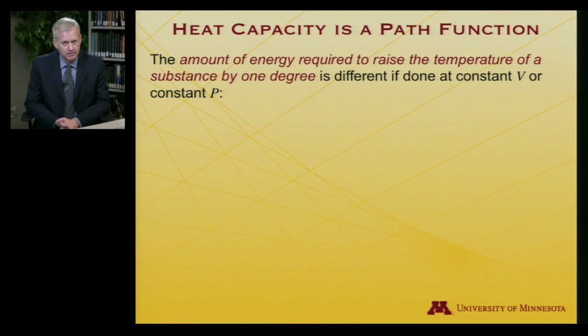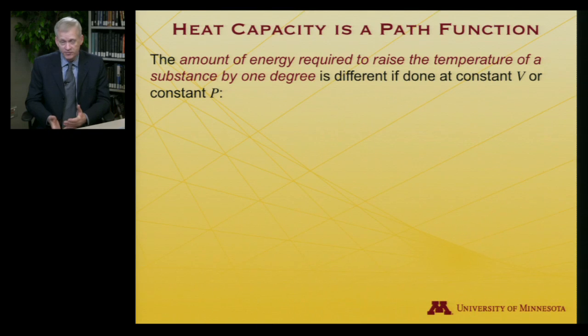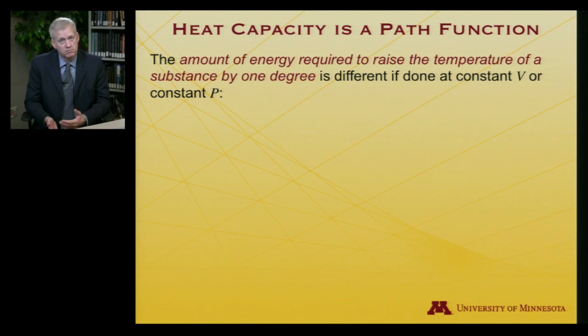I want to return to something we've seen before, namely heat capacity, but now within the context of considering constant pressure as well as constant volume processes. Heat capacity is a path function, not a state function. The definition of heat capacity is the amount of energy required to raise the temperature of a substance by one degree, and it's different when done at constant volume compared to constant pressure. That's how we know it's a path-dependent function.